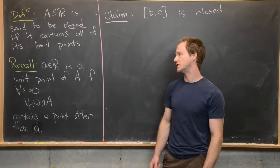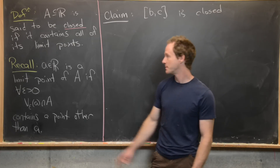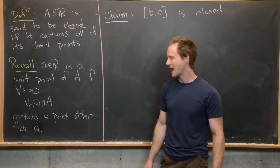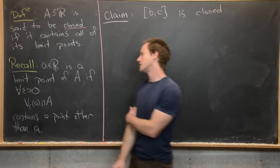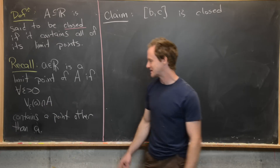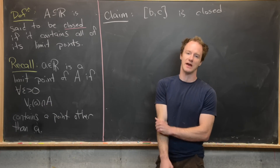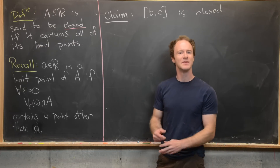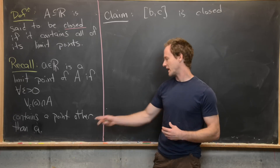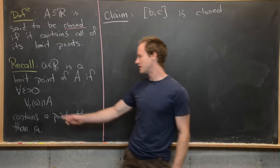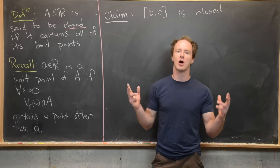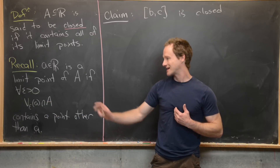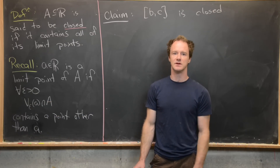In the previous video we introduced the notion of a limit point. A number A is a limit point of the set A if for all epsilon greater than zero, the epsilon-neighborhood of A intersected with A contains a point other than A. This requirement of a point other than A is very important. Some texts get around this by using a deleted epsilon neighborhood, which is essentially the epsilon neighborhood with the point A itself removed.